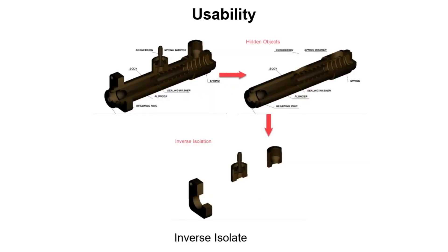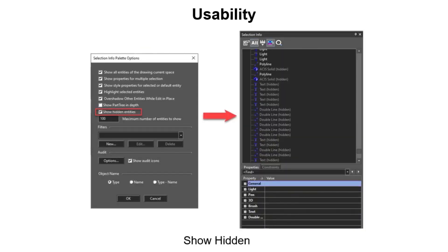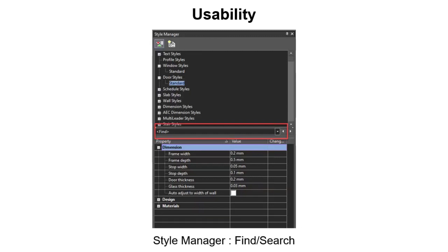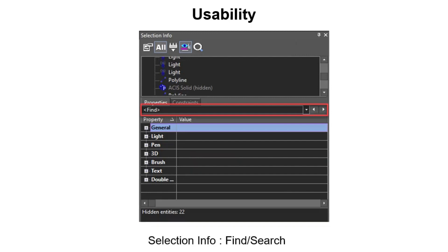A new tool, Inverse Isolation, was added to the Edit menu. Clicking this tool makes hidden objects visible and visible objects hidden. Additionally, hidden objects are now shown in the Selection Info palette. Icon sizes and tool palettes can now be resized when scaling the toolbar icons in the customization window. A new search bar has been added to the Style and Selection Information palette, allowing users to easily find different commands or tools in the associated palette.